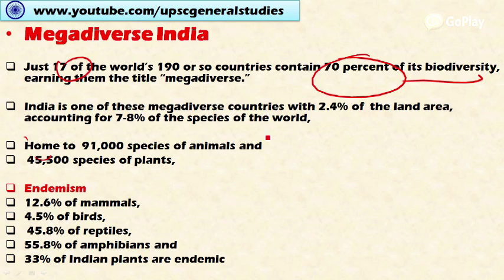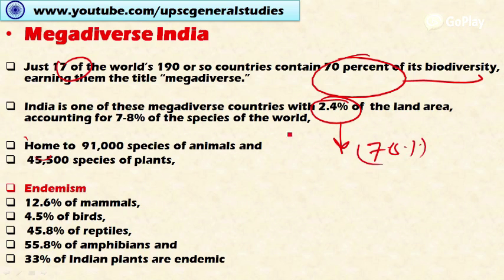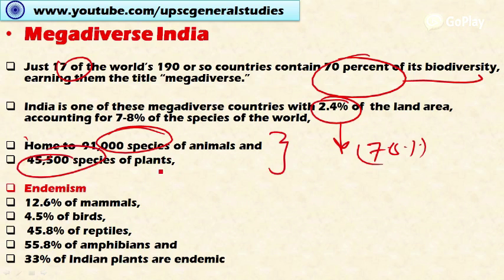The specialty of India is that even though it accounts for only 2.4 percent of the land area of the world, it provides space for seven to eight percent of the species of the world. So this is a highly biodiverse country. India provides home to 91 thousand species of animals and 45 thousand species of plants.